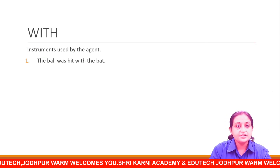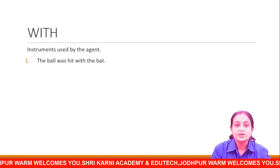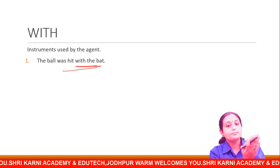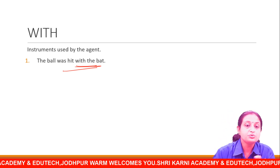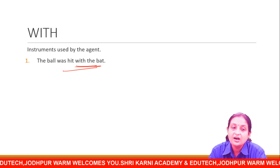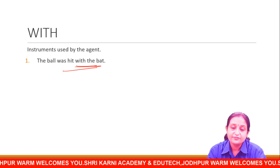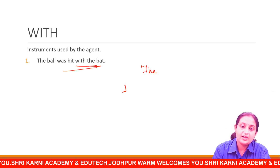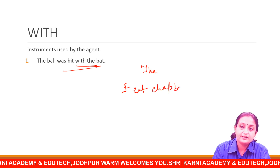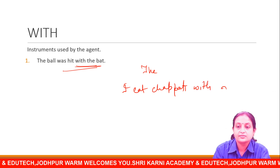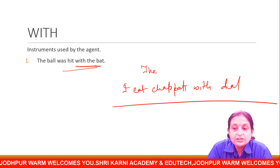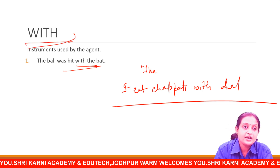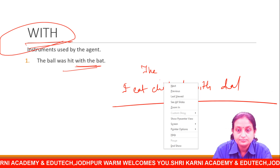With — the instrument used by an agent. 'The ball was hit with the bat' — ball को bat द्वारा मारा गया. 'I ate chapati with dal', 'I ate chapati with paneer or curd.' With तो बहुत simple है — उसके साथ. That is with.